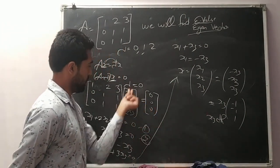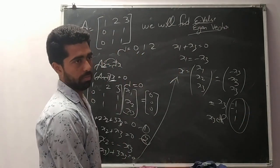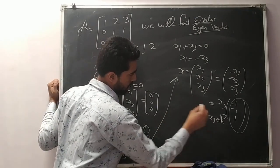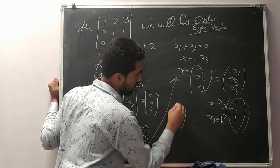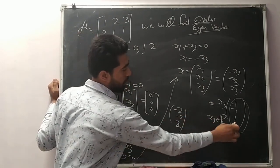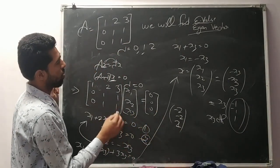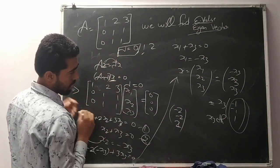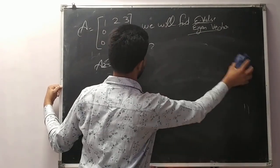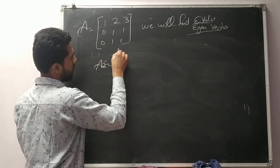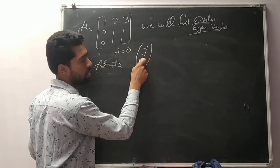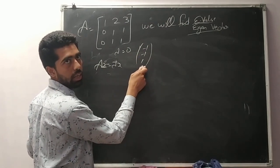x3 can be any real number and this is the non-zero vector. There are infinitely many eigenvectors but only one linearly independent eigenvector. For example, if x3 equals 2, we get [-2, -2, 2]; if x3 equals 3 we get [-3, -3, 3] — both are dependent. Only one independent eigenvector corresponds to lambda equal to 0, which is [-1, -1, 1]. We can take any easy linearly independent vector.